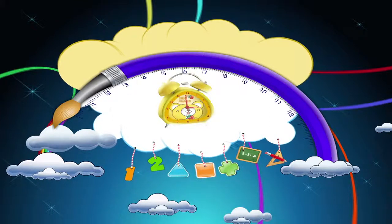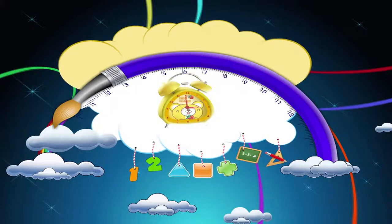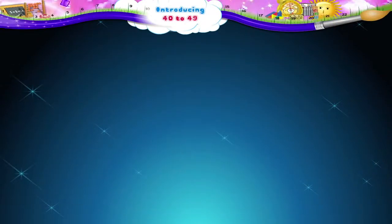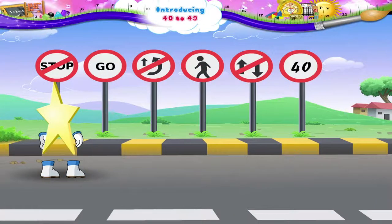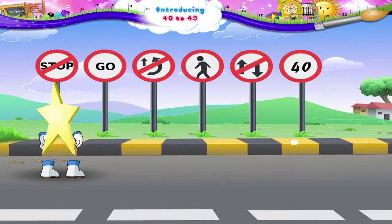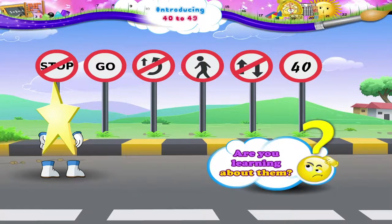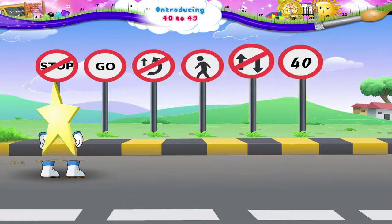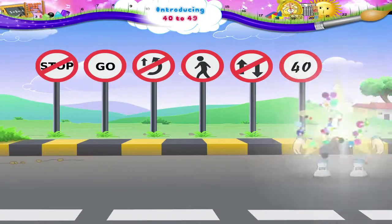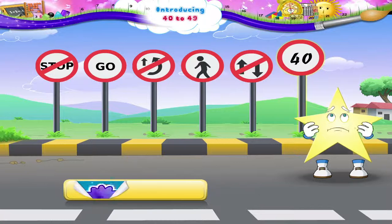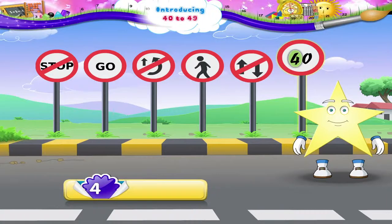Introducing 40 to 49. Starry, what are you doing with these road signs? Are you learning about them? Stop! Go! So many different signs. Oh! You don't know what that number is on that sign? It's 4 and 0.